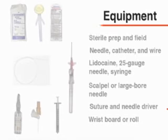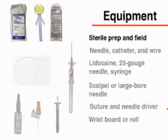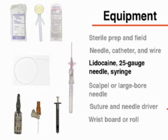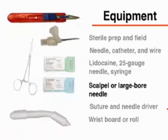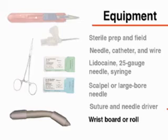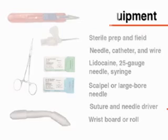For both procedures, similar equipment will be used: material for a sterile prep and a sterile field, a needle, catheter and wire, 1% lidocaine, a 25-gauge needle and 1cc syringe, a larger bore needle or scalpel, suture and needle driver, and a wrist board or roll.